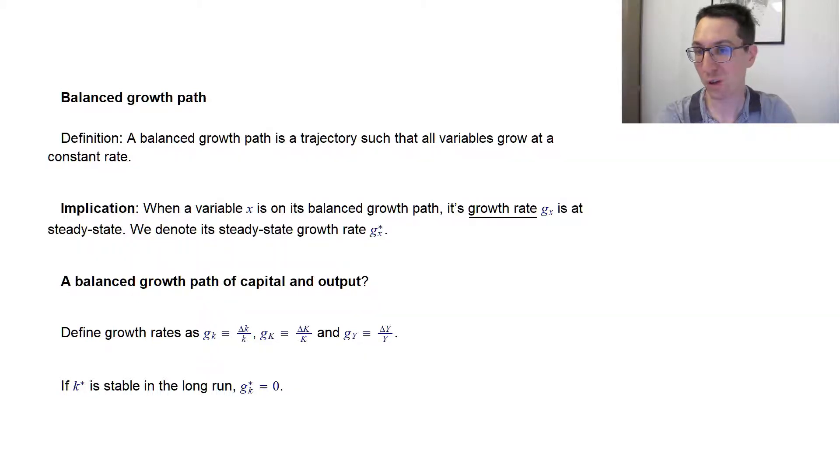Are we sure that a balanced growth path exists? No, not at all. But we may get lucky with the Solow model. Another thing to notice is that there's no guarantee that all variables grow at the same rate. Some variables may grow at the rate of zero, other 2%, other 4%. So we have to compute them.